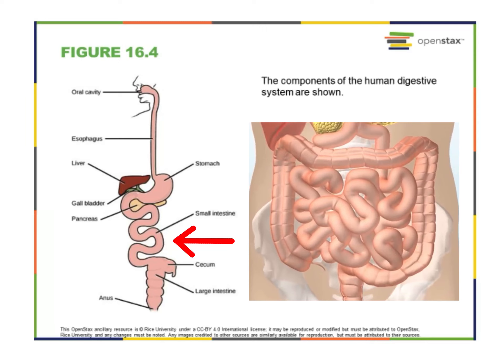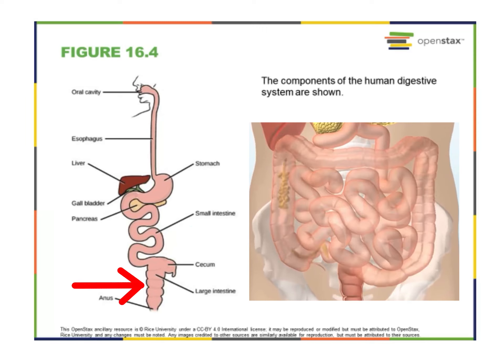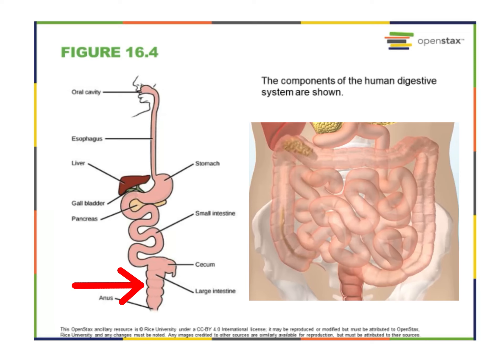Bile is produced in the liver and stored and concentrated in the gallbladder. Bile contains bile salts, and bile salts make lipids accessible to water-soluble enzymes — they're very important in digestion. After material passes through the small intestine, it then enters the large intestine.